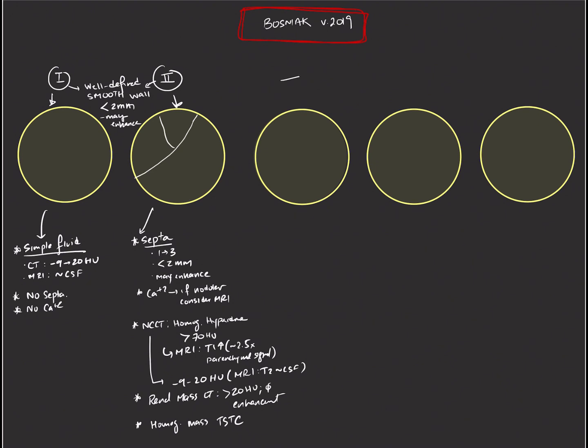And we move on then to Bosniak 2F lesions. These are lesions that have a little bit more complexity to them, and as a result of that, we're required to have follow-up at least at six months' time, and then yearly for at least five years.